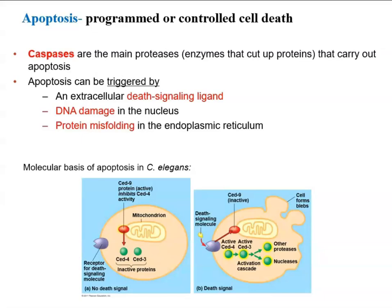If a damaged cell continues to live and divide, it could become cancerous, so you would not want that. As a protective mechanism, DNA damage signals the triggering of apoptosis. Another example trigger is protein misfolding — proteins being misfolded by the cell indicate that something is wrong, and you definitely do not want the cell to continue that process.